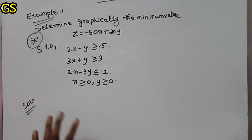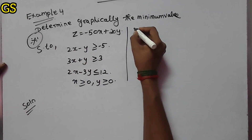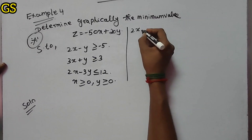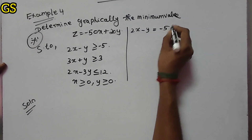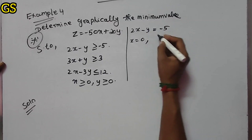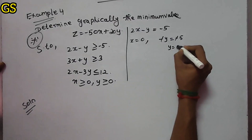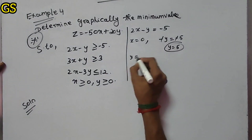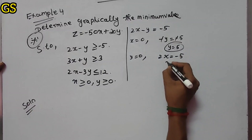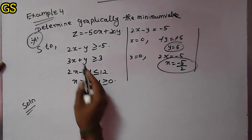First, we find the constraint points. The first constraint is 2x minus y equals minus 5. When x is 0, minus y equals minus 5, so y equals 5. Next, when y is 0, 2x equals minus 5, so x equals minus 5 by 2. First constraint is solved. Second constraint is next.